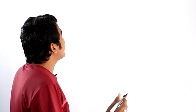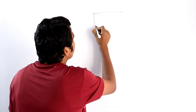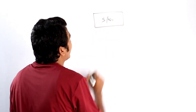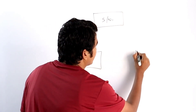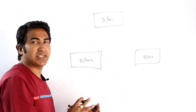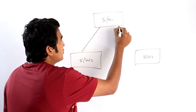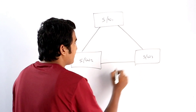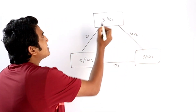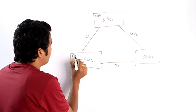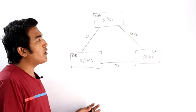Let me design a simple topology on the board so we can understand the concept of how to protect your root bridge switch. Let's suppose I have switch 1, switch 2, and switch 3, connected via links 0/1, 0/2, and 0/3. The MAC address of switch 1 is 0E, MAC address of switch 2 is 0B, and MAC address of switch 3 is 0C. By default, the priority on all switches is 32768.